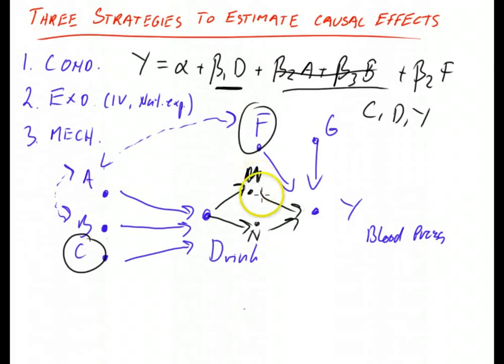In that case, all you need to estimate the effect of drinking on blood pressure is this set. You need D, M, N, and Y. Now you see based on the three strategies here you need different kinds of information in order to estimate the causal effect of D on Y. And sometimes you have some of this information and sometimes you don't. So the choice of strategy depends on the information you have.